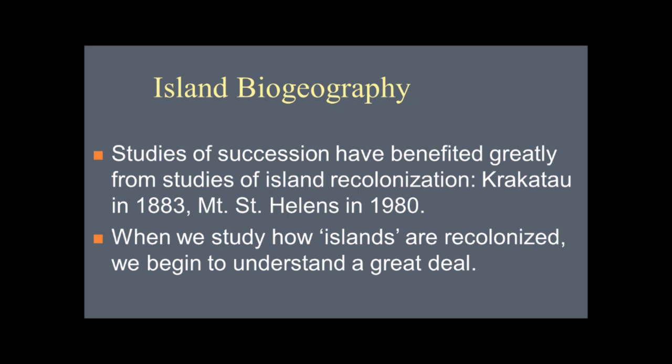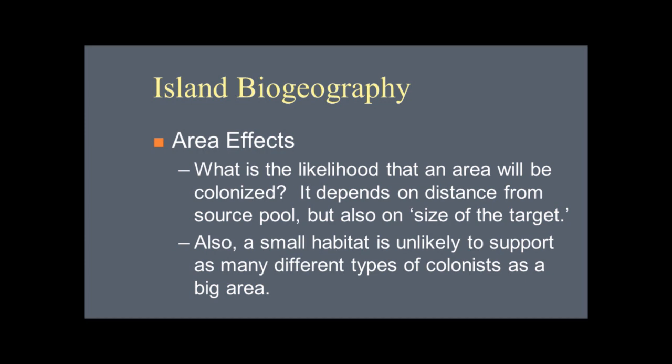Two obvious things in island biogeography are area and distance. If an island is close, it's probably easier to get to than if it's far away. If the island is large, it represents a bigger target. Big islands that are close are going to be pretty easy to colonize; small islands that are far away are going to be much harder. Think of the Catalina or Channel Islands in California — some are big and some are small, varying distances from the mainland.